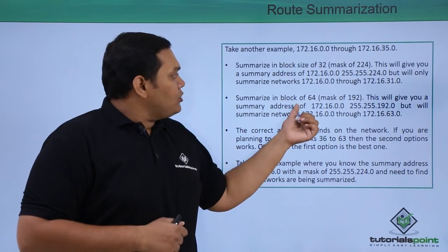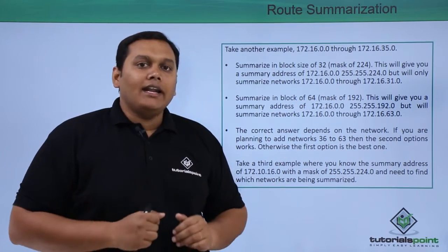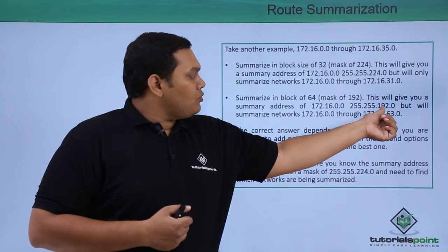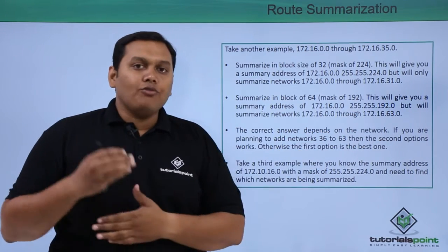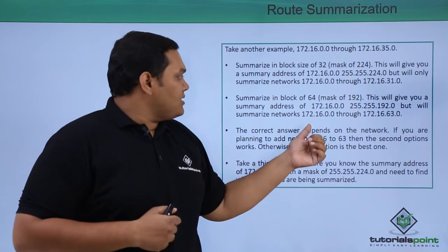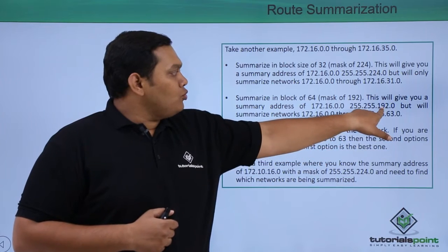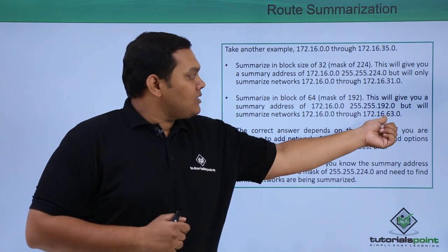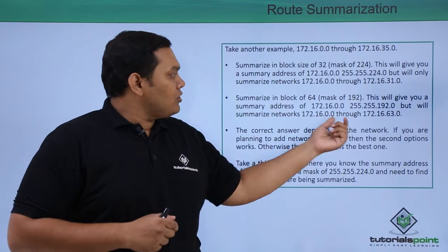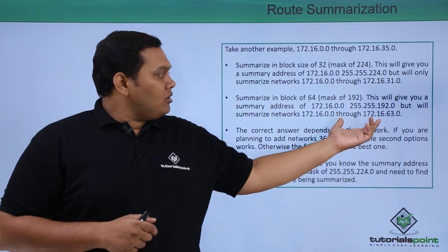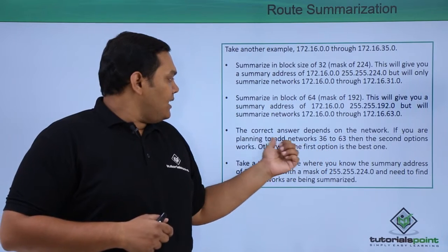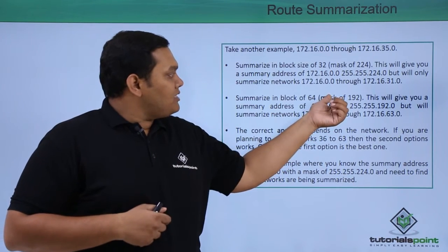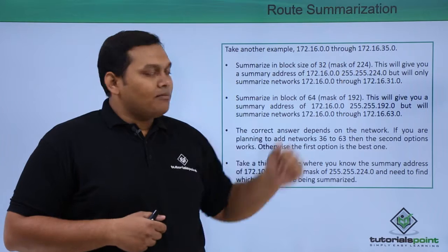Another example has a block size of 64 and a mask of 192. This gives a summary address of 172.16.0.0 with subnet mask 255.255.192.0. The summarized network starts from 0.0, and 255 minus 192 gives you 63, so you summarize up to 172.16.63.0 — that is, from 0.0 to 63.0. Depending on your network, if you add up to 63 the second example fits best, but if you add up to 36 the first example fits best.